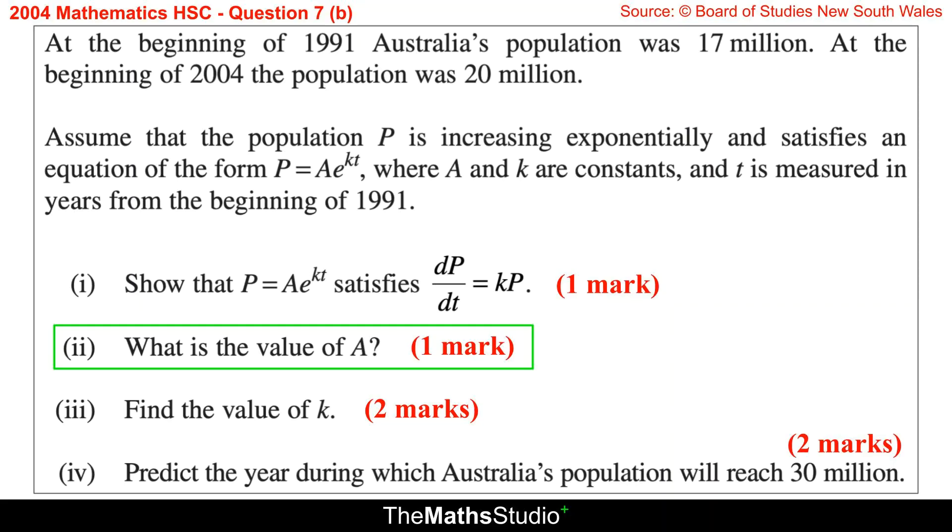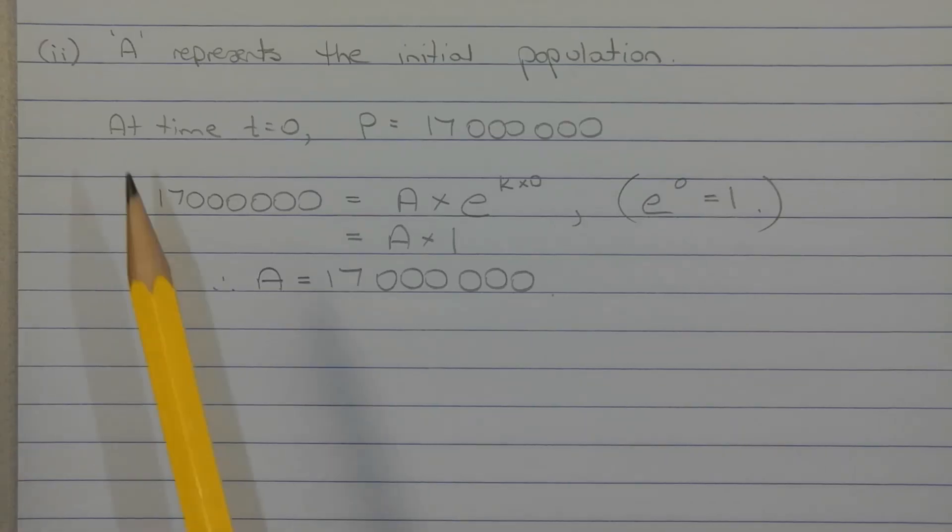Part 2. What is the value of A? A represents the initial population. So at time T equals 0, the population P is equal to 17 million.